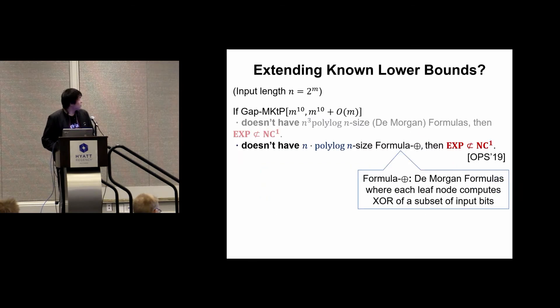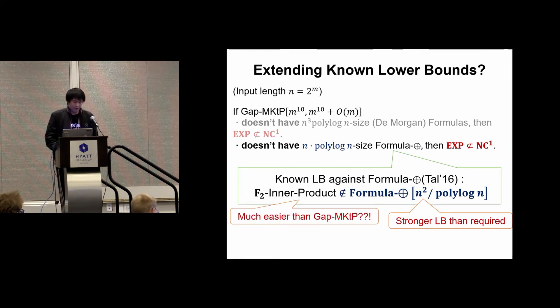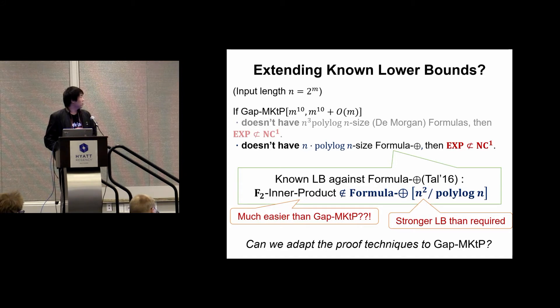Here is another example in a different computational model, the formula of XORs, which are De Morgan formulas where each leaf node computes an XOR function over input bits. In this model, the required lower bound is only n times polylog(n). And interestingly, we actually know how to prove a much stronger lower bound in this model. However, it is for a different language, the F2 inner product. But this problem appears to be a much easier problem than MKTP. So if we could adapt the proof techniques of this lower bound to the MKTP language, we would also have breakthrough lower bounds.